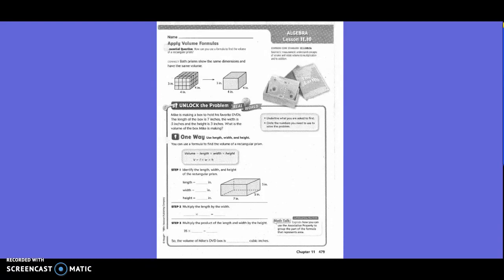Unlock the problem. Mike is making a box to hold his favorite DVDs. The length of the box is 7 inches, the width is 5 inches, and the height is 3 inches. What is the volume of the box Mike is making? So they want you to underline what you're asked to find. Circle the numbers you will need to use to solve the problem. So what will we need to use? 7, 5, and 3. And then we will need the inches part, right?